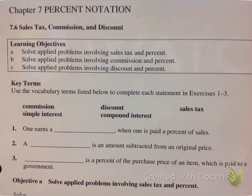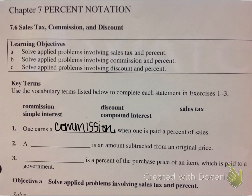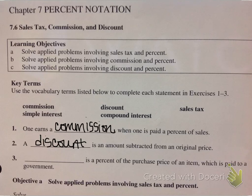Now let's look at sales tax, commissions, and discounts. One earns a commission when one is paid a percent of sales — for instance, car salesmen, some retail people, or pharmaceutical reps all get paid a commission. A discount is an amount subtracted from an original price, and sales tax is a percent of the purchase price of an item which is paid to a government.